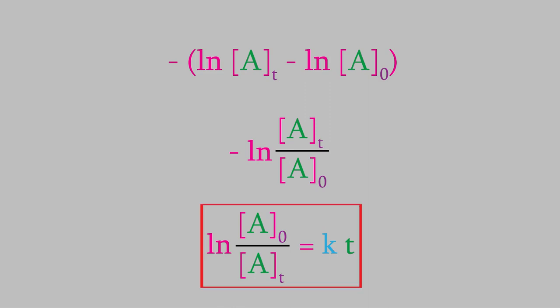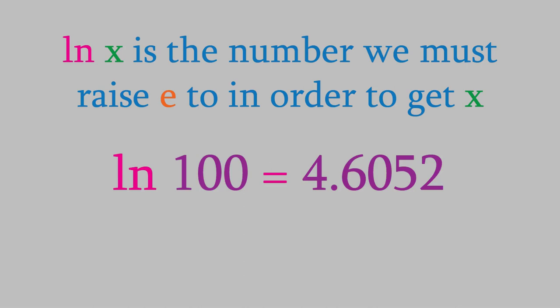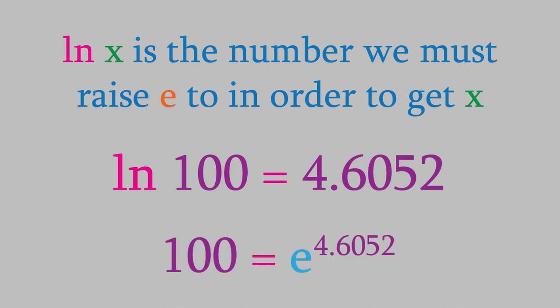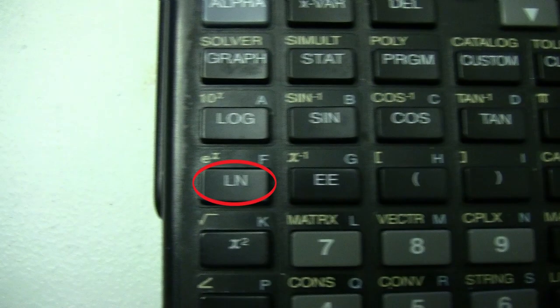And that's it! This equation ties together the beginning and ending concentrations and the amount of time that's passed. Before we use it, I want to remind you about what the natural logarithm means. The natural log of x is the number we'd have to raise e to in order to get x. For example, the logarithm of 100 is 4.6052, meaning e raised to 4.6052 equals 100. If you have a scientific calculator, you should have a button to take the logarithm. Notice there's also a button that says 'log' — this is a different type of logarithm and gives a different result. Be careful to use 'ln', the button for natural logarithm, and not the button that says 'log'.